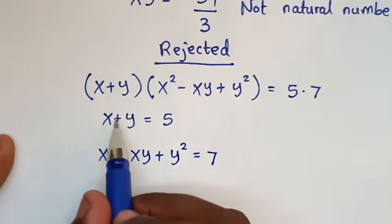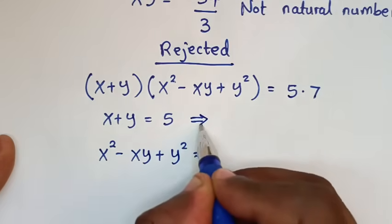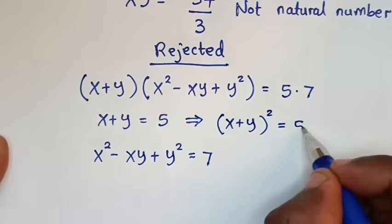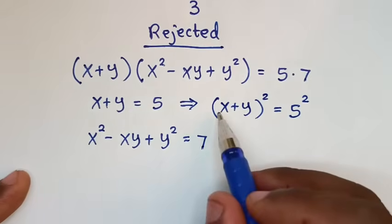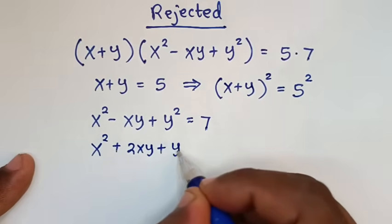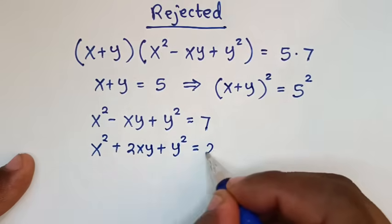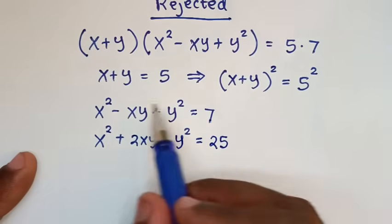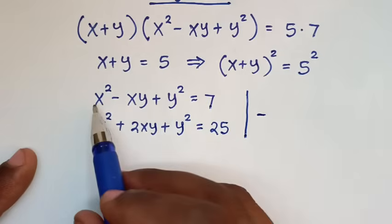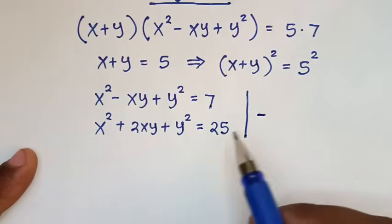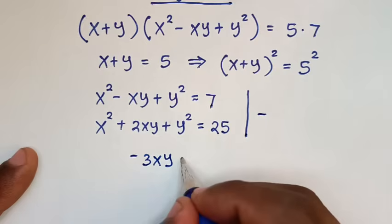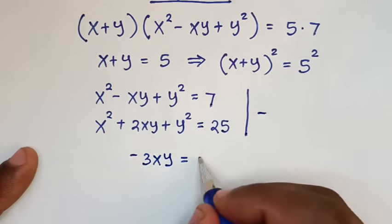Now, to be able to solve these two equations, into the first equation we will square on both sides. So x plus y bracket squared is equal to 5 squared. We expand: x squared plus 2xy plus y squared is equal to 25. Then we take this equation minus that equation: x squared minus x squared is 0, minus xy minus 2xy is minus 3xy, y squared minus y squared is 0, equal to 7 minus 25, it is minus 18.